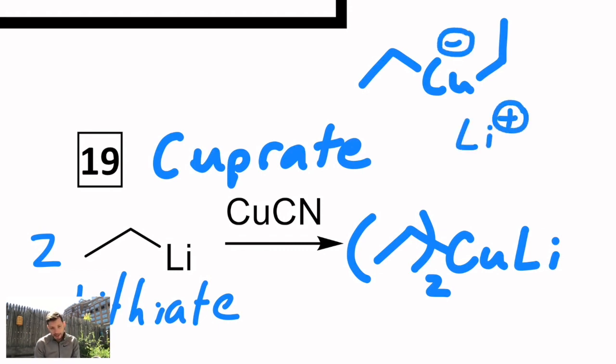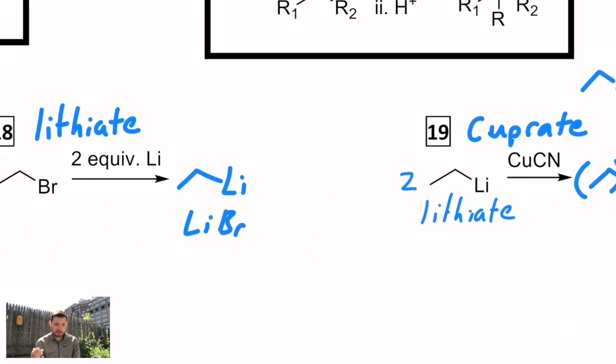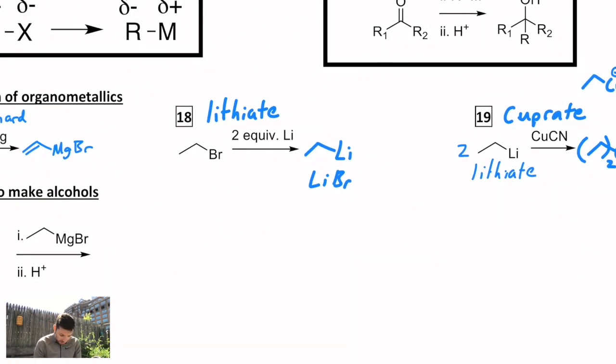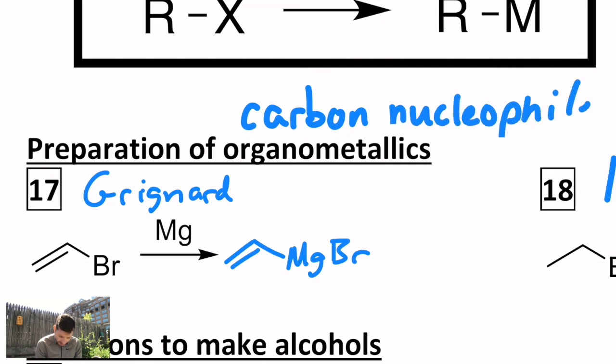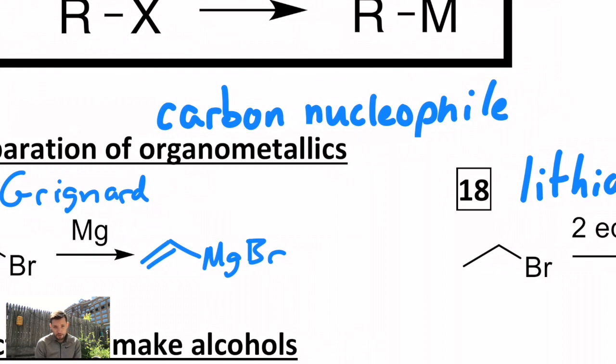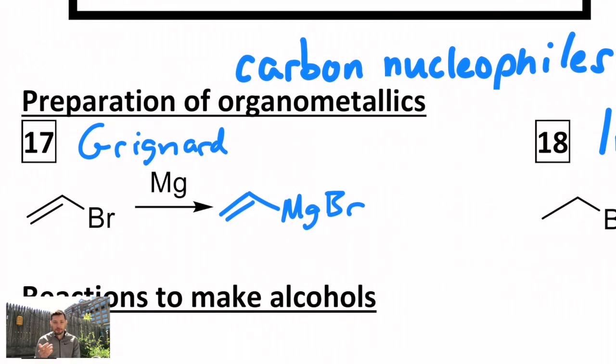What these things all have in common is that they behave like carbanions. These are carbon nucleophiles. So this is just how we make them. But the point of this is, if you see one, you think of it as if it's a negative charge on the carbon attached to the metal.